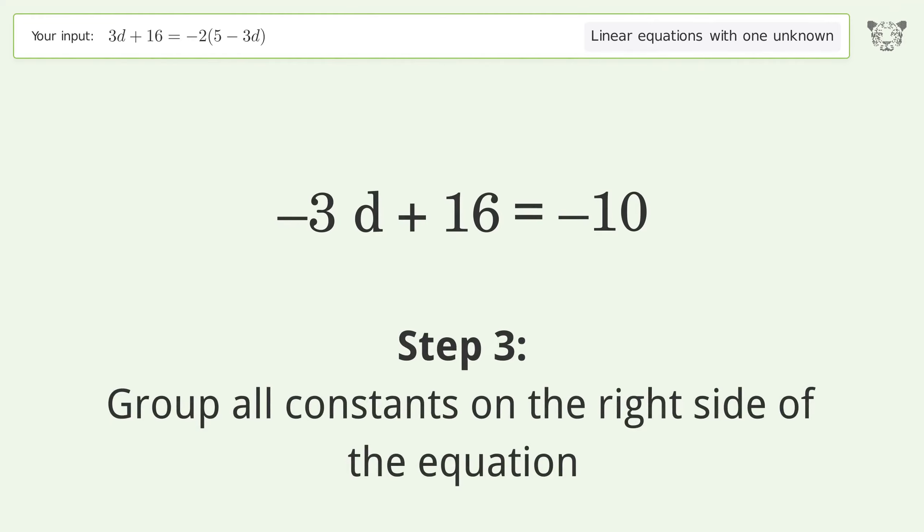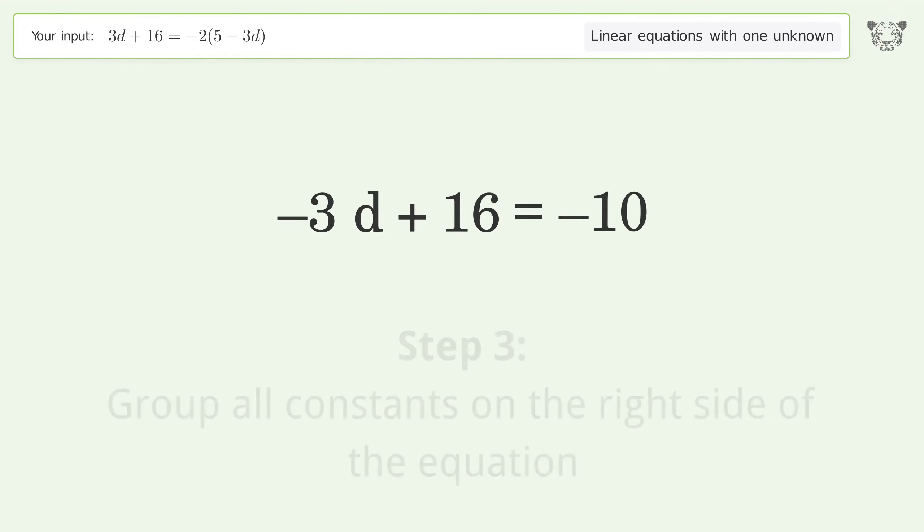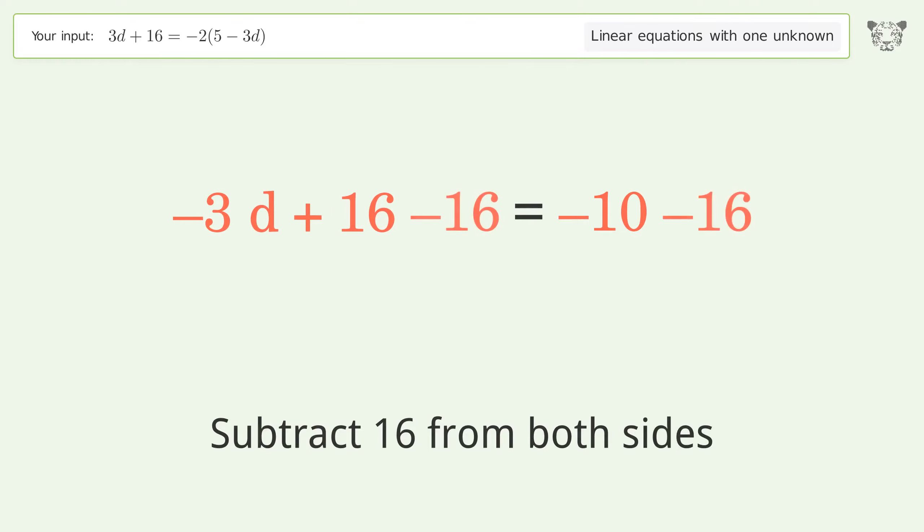Group all constants on the right side of the equation by subtracting 16 from both sides. Simplify the arithmetic.